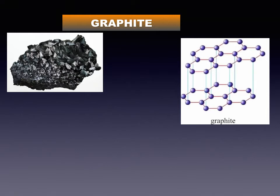Graphite found in nature is black, soft, brittle, and slippery. Inside each layer of graphite, free electrons move continuously within the entire layer. That is why graphite is a good conductor of electricity. Due to the layered structure, graphite can be used for writing on paper. The density of graphite is 1.9 to 2.3 grams per cubic centimeter. Graphite does not dissolve in most solvents.